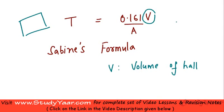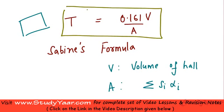In this formula, V is the volume of hall and A is the total absorption by different materials used in the hall, which equals summation Si alpha i, where S is the surface area of the material and alpha is the absorption coefficient. With this formula you can calculate the reverberation time in a hall.